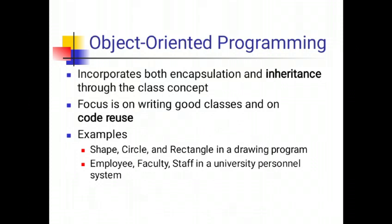Object-oriented programming incorporates both encapsulation and inheritance through the class concept. It focuses on good classes and on code reuse. Examples include shapes, circles and rectangles in a drawing program, and employee, faculty and staff in a university personnel system.